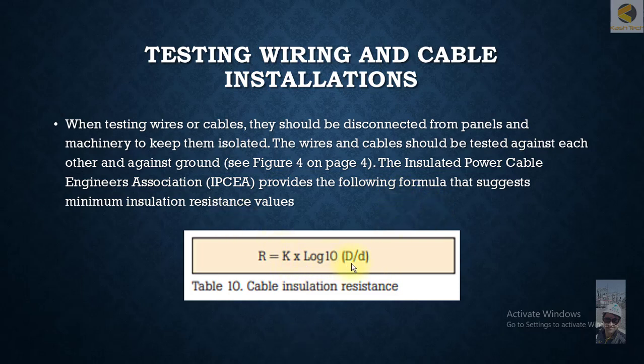In the formula, D is the diameter of the insulation and d is the diameter of the copper conductor. These are the testing requirements for the cable.